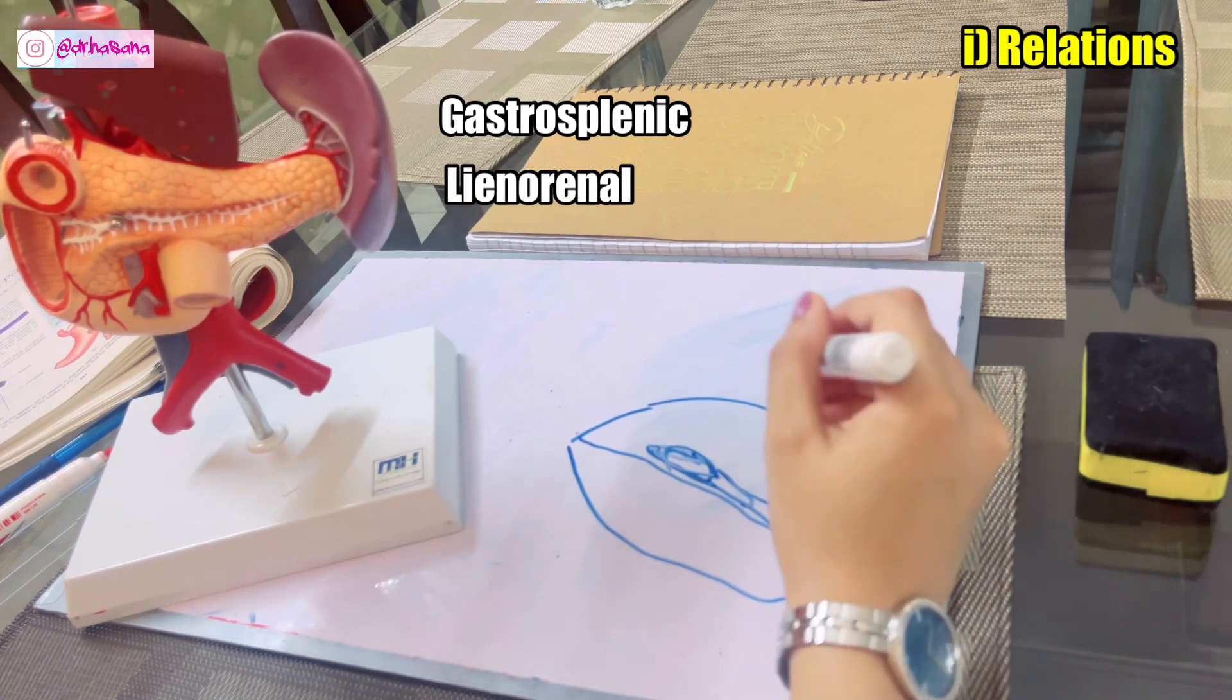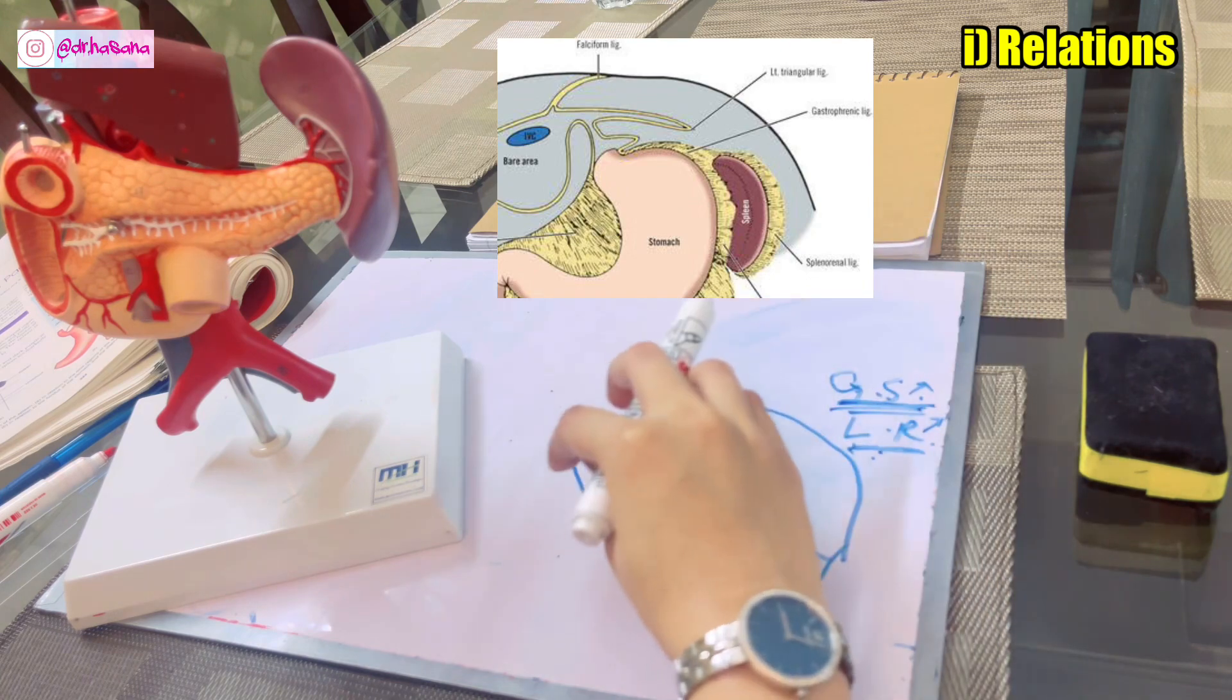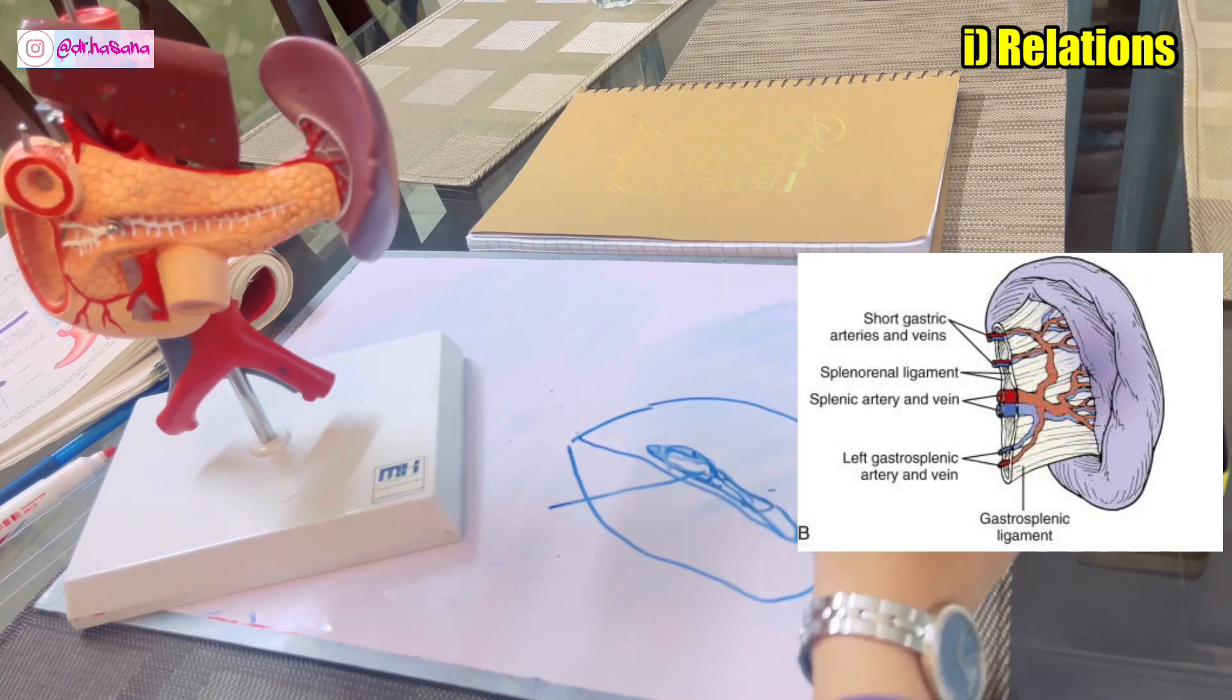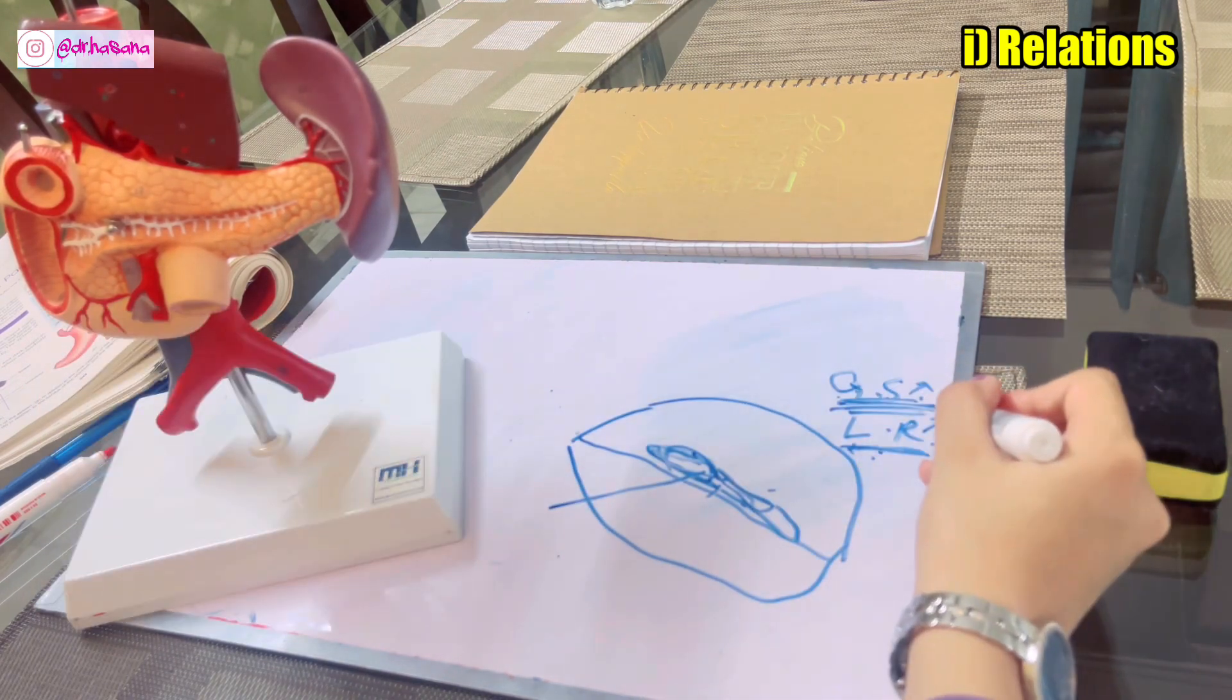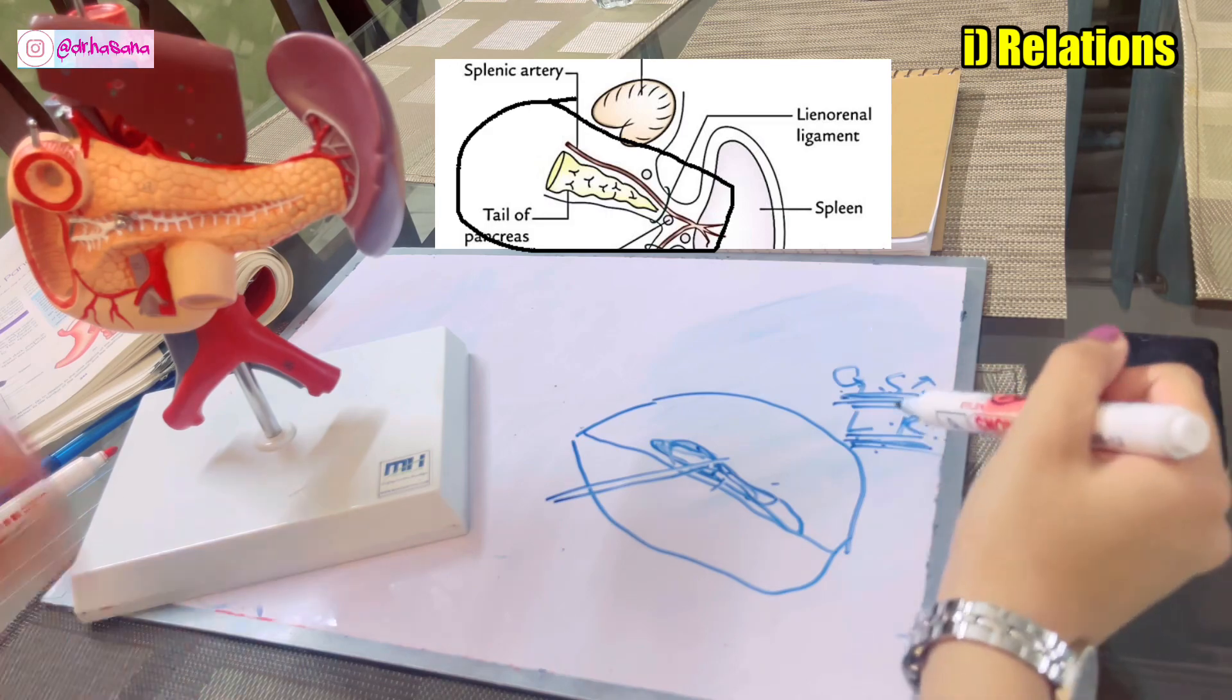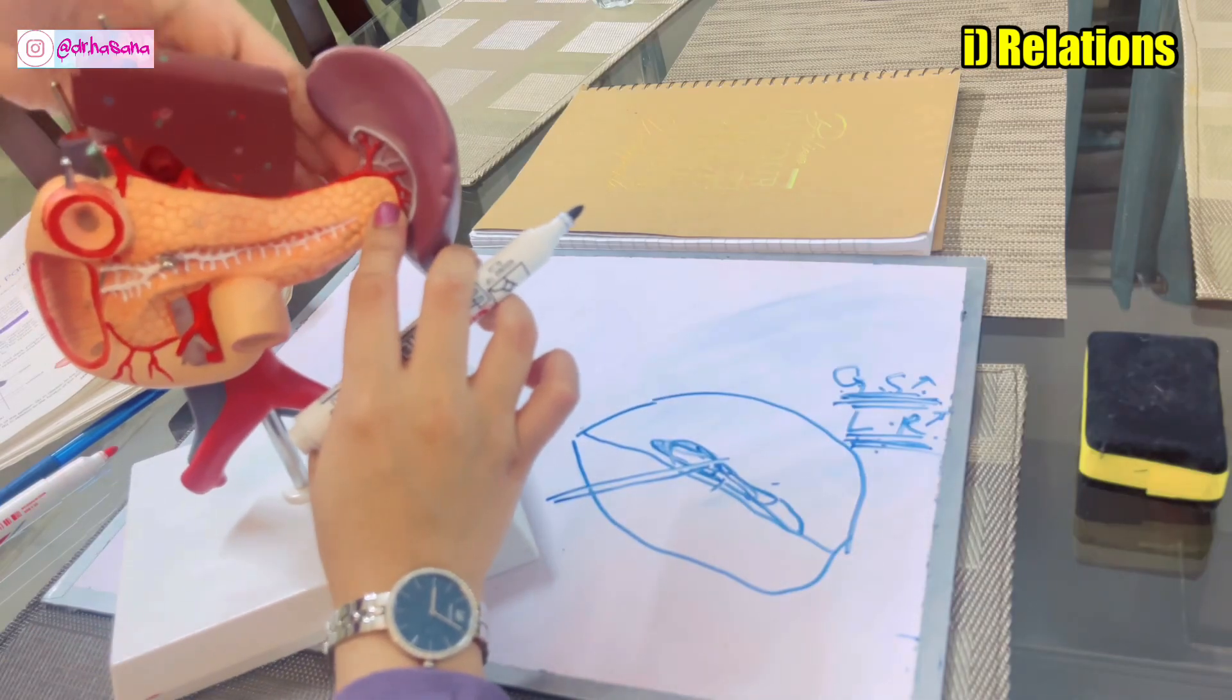These two ligaments are in relation to the organs nearest to spleen. Here comes the stomach and posteriorly comes the kidney. The gastrosplenic ligament is attached to the hilum of the spleen and the greater curvature of the stomach. The lienorenal is attached to the hilum of the spleen and the anterior surface of the kidney. The gastrosplenic ligament contains the short gastric vessels, lymphatics and nerves. The lienorenal ligament contains the splenic artery and vein, the tail of the pancreas, and lymph nodes.